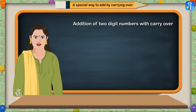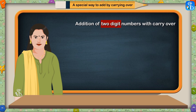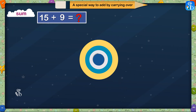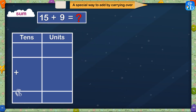Addition of two digit numbers with carryover. Children, it is easy to solve the addition sums without carryover. Now we will solve some difficult additions — that is, addition of two digit numbers with carryover. For which the first example is 15 plus 9 is equal to — let's write these numbers in vertical display.